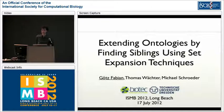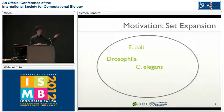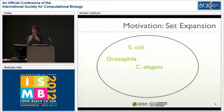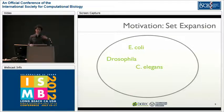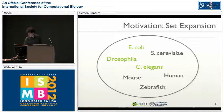My name is Gertz Fabian and I'd like to present my talk on extending ontologies by finding siblings using set expansion techniques. To get started, here are three terms: E. coli, Drosophila, and C. elegans. These are what we call seed terms, or C terms. We start from those terms and try to find more terms belonging to that set. Since these are all model organisms, we're expanding the set of model organisms — starting from the C terms we could find mouse, human, or zebrafish. This is the principle of set expansion.